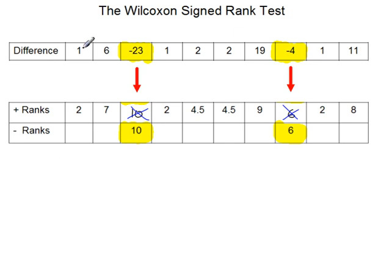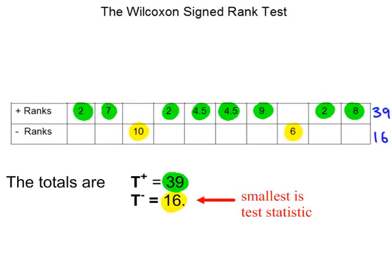OK, so positive difference, positive row here for the ranks. Negative difference, the negative row for the ranks. OK, that's the hard bit done, this is the easy part now.